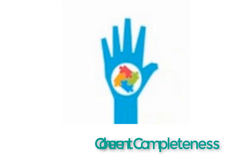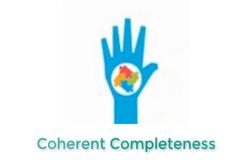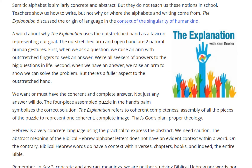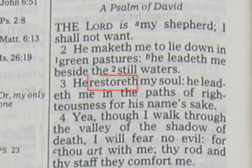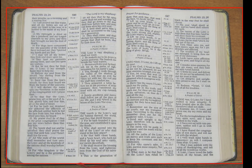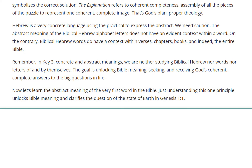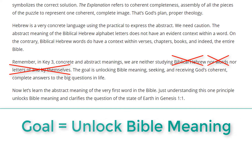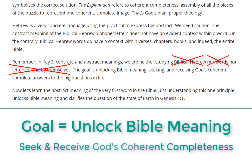The Explanation refers to coherent completeness — assembly of all the pieces of the puzzle to represent one coherent, complete image. That's God's plan, proper theology. Hebrew is a very concrete language using the practical to express the abstract. We need caution. The abstract meaning of Biblical Hebrew alphabet letters does not have an evident context within a word. On the contrary, Biblical Hebrew words do have a context within verses, chapters, books, and indeed the entire Bible. In Key 3, Concrete and Abstract Meanings, we are neither studying Biblical Hebrew nor words nor letters by themselves. The goal is unlocking Bible meaning — seeking and receiving God's coherent, complete answers to the big questions in life.